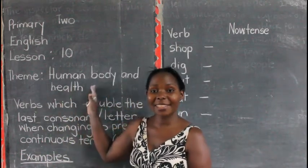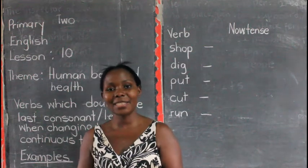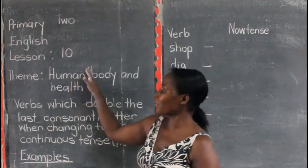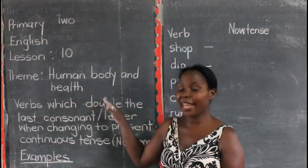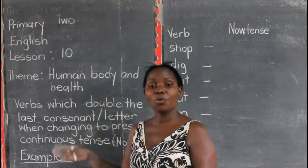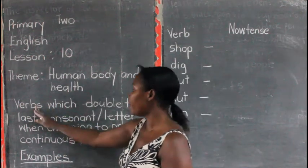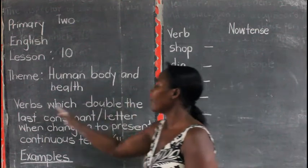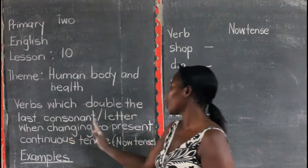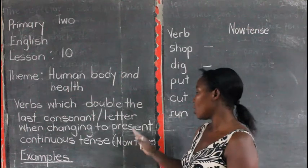This is our kente lesson. In the other lesson, we looked at how we can use the words in brackets to complete the sentences. In this lesson, we are going to see how we can change verbs to present continuous tense. We are dealing with verbs which double the last consonant when changing to present continuous tense, or now tense.